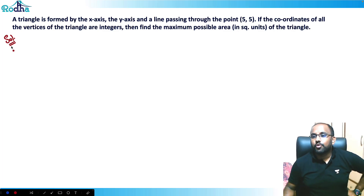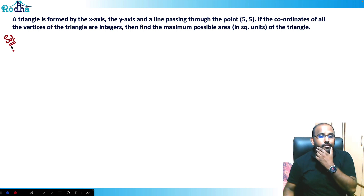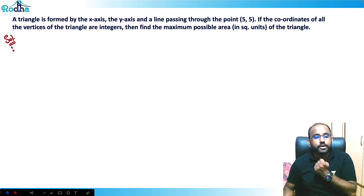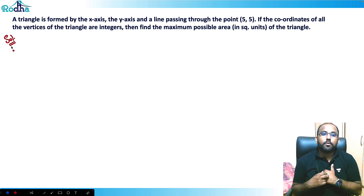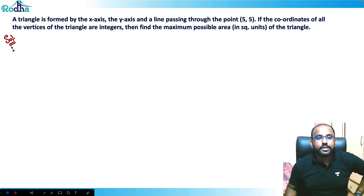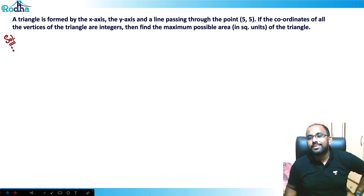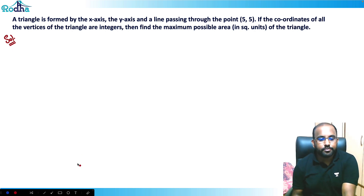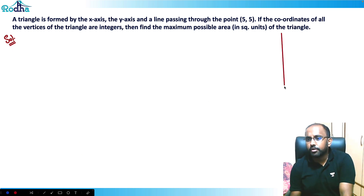Let's look at this question — a very good and mistake-prone question. It says that a triangle is formed by the x-axis, the y-axis, and a line passing through the point (5, 5). If the coordinates of all the vertices of the triangle are integers, find the maximum possible area of the triangle.